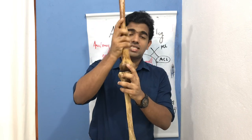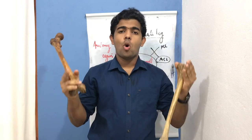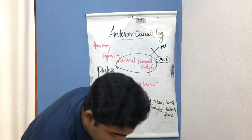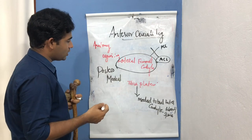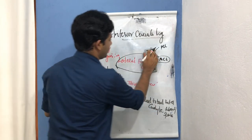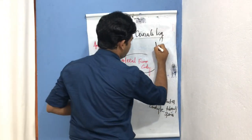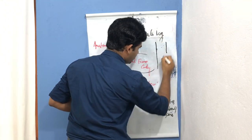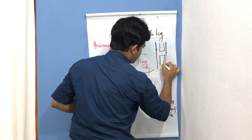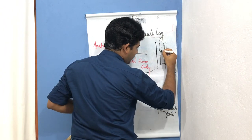Now what is the direction of these fibers, or the spatial orientation of the fibers of the anterior cruciate ligament? If you have a knee over here, let this be our femur and let this be our tibia — the fibers are arranged in this manner.